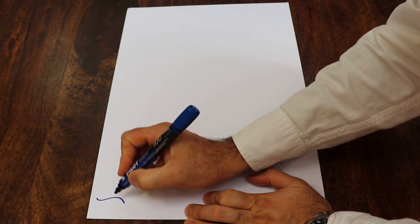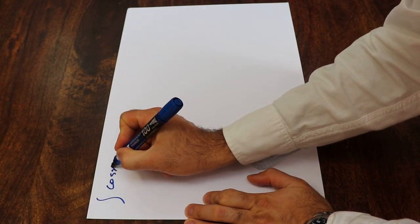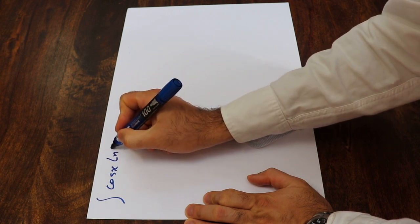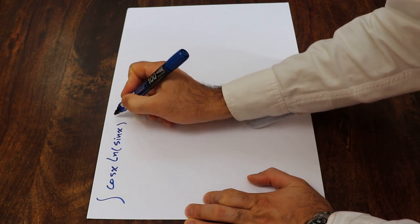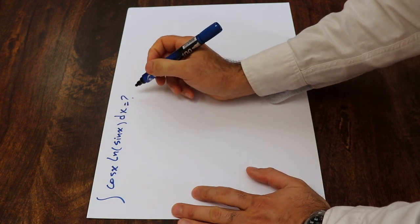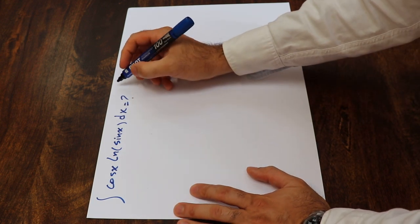Hello, today I'm going to show you how to calculate the integral of cosine x times ln sine x dx. You can solve this integral using the formula for integration by parts.